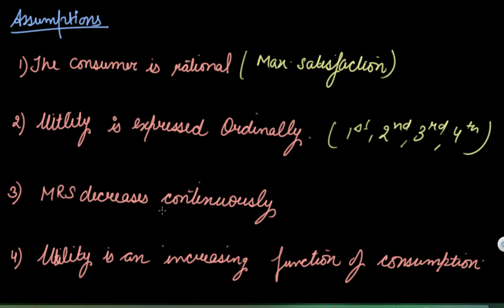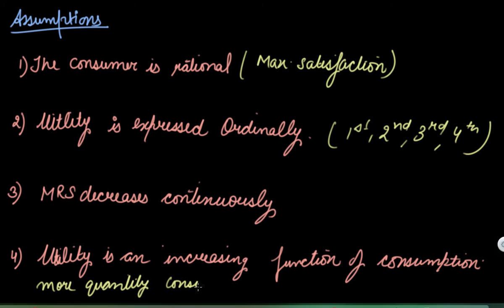Assumption three: MRS decreases continuously. As the consumer consumes more of good X, they have to sacrifice good Y. For each additional unit of good X, the consumer is willing to sacrifice less and less of good Y — this is why the marginal rate of substitution decreases continuously. Assumption four: utility is an increasing function of consumption, meaning as more quantity is consumed, more utility is derived.